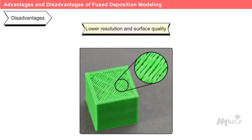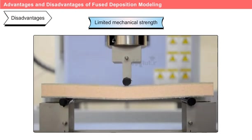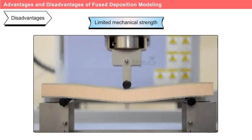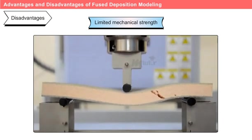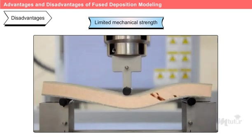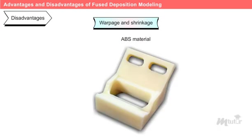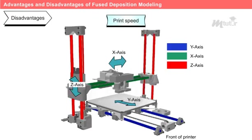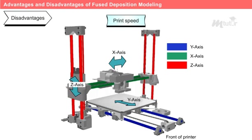Disadvantages: the first disadvantage is lower resolution and surface quality — FDM printed parts may exhibit visible layer lines, leading to lower resolution and surface quality. Second is limited mechanical strength: while FDM can produce structurally sound parts, the layer-by-layer nature of the process can result in anisotropic properties. Third is warpage and shrinkage: some materials used in FDM, such as ABS, can be prone to warping and shrinkage during cooling. Fourth is print speed: FDM printing can be relatively slow, especially for high-quality prints with finer layer resolutions.